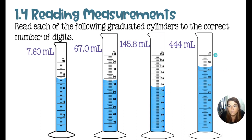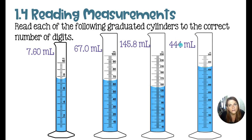The final graduated cylinder counts by tens. In the tens place I know it's the last known digit, so the final digit in the ones place is the estimated digit. Something to note: you are reading from the bottom of the meniscus for each of these graduated cylinders. And if your measurements are off by a tiny bit, don't worry about it.